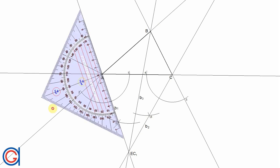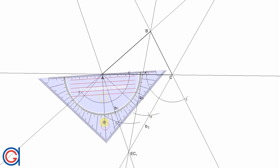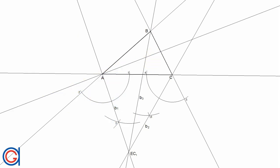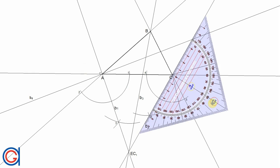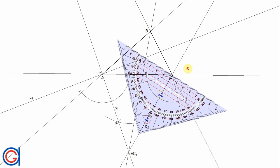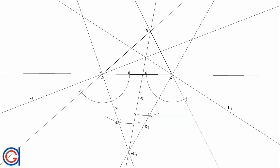To obtain the internal angular bisector of vertex A, you have to draw a perpendicular line to B1, passing through point A and elongate it on both sides. We will call this angular bisector B4. Now we are going to repeat this process with vertex C, drawing a perpendicular line to B2, passing through point C and elongating it on both sides. We will call this internal angular bisector B5, as can be seen here.